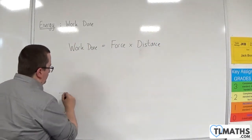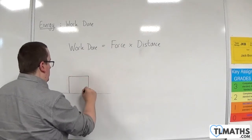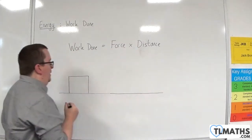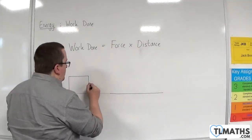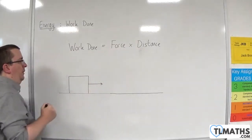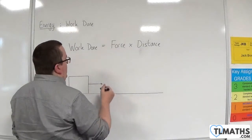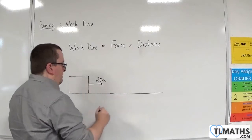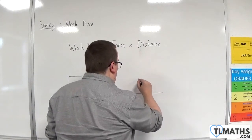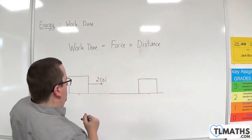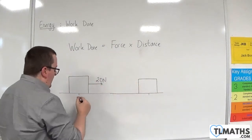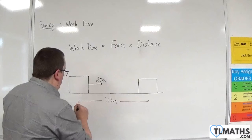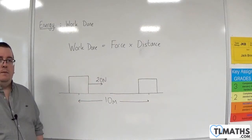Here is my object on the ground. Let's assume that it's a smooth surface. We just have a force that is pulling it along — let's say that is 20 newtons. And from here to here is where it travels to. Let's say that this is 10 metres, so it's travelled 10 metres. What is the work done by that force?